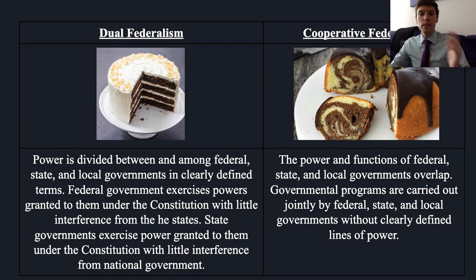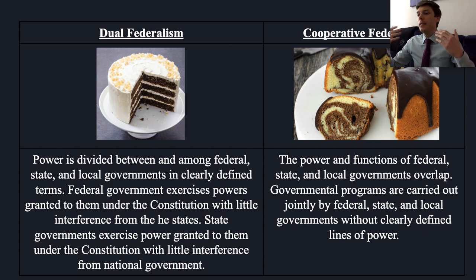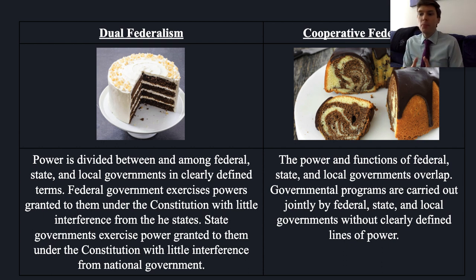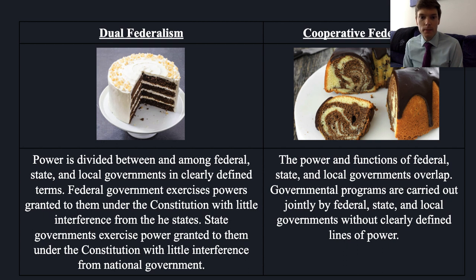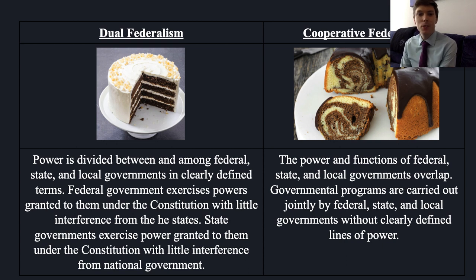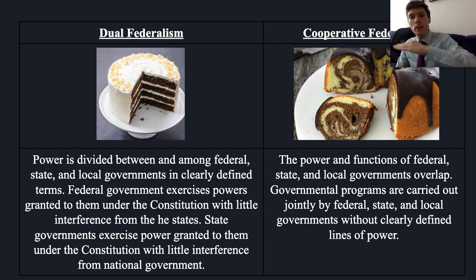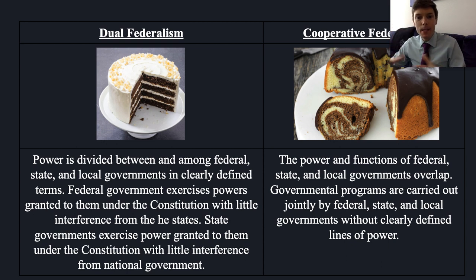This brings us to dual federalism versus cooperative federalism. Dual federalism is where roles are clearly defined and divided among federal, state, and local governments. The federal government exercises power granted to it under the Constitution with little interference from the states, and state governments exercise their power with little interference from the national government. An example is Article I: Congress legislates on commerce among the states, while states regulate commerce within their own borders. Chief Justice Marshall said states still had some rights over commerce and rejected exclusive national authority over internal commercial activity.